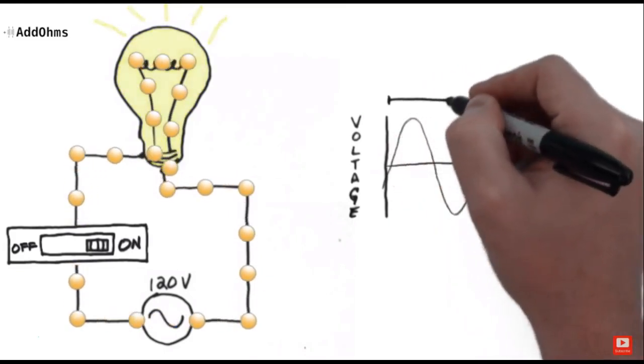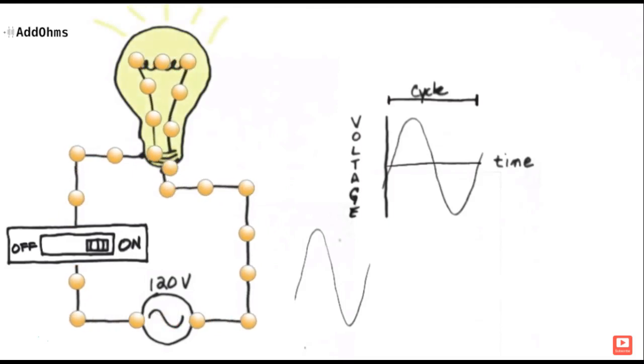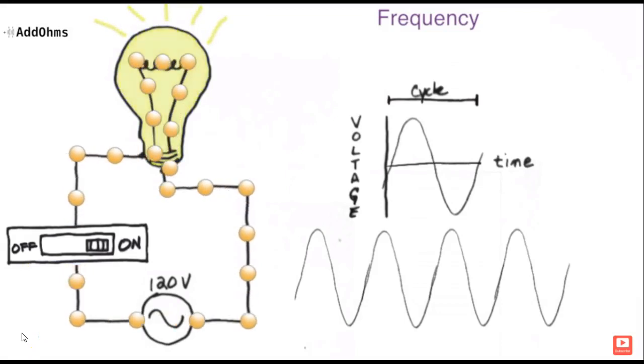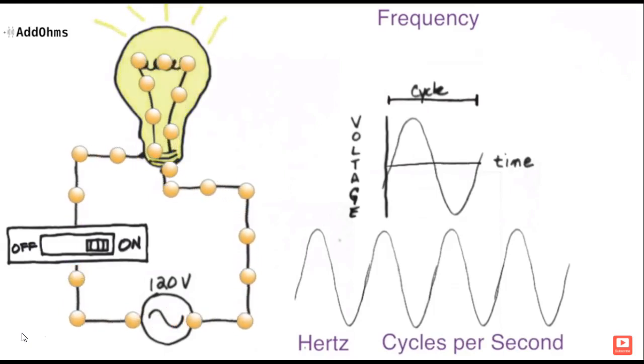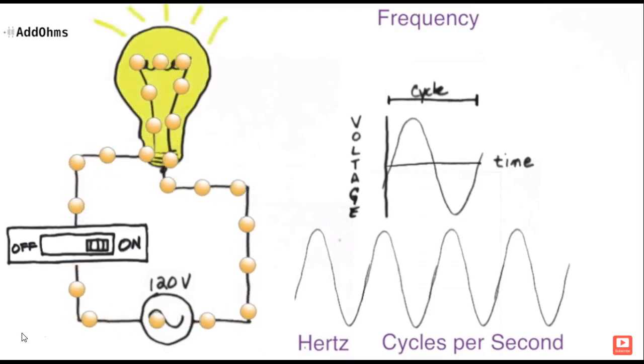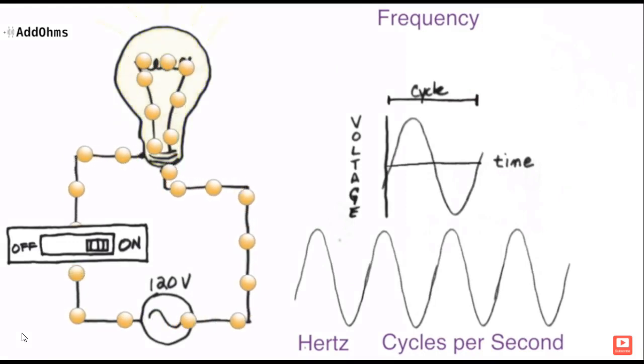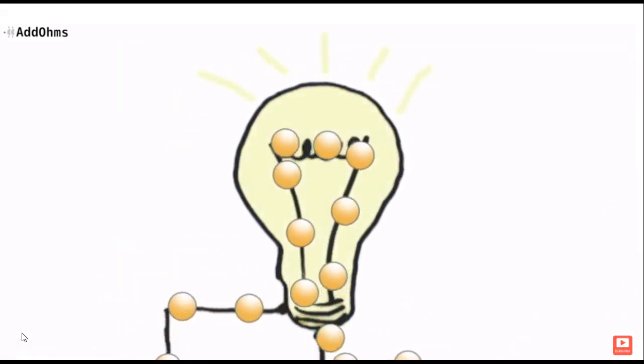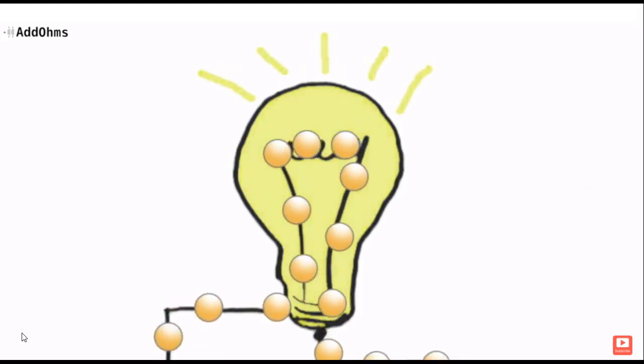We need to define a couple things. First, the change from start to finish is called a cycle. The rate at which the cycle repeats is frequency. Frequency is measured using the unit hertz, which means cycles per second. Different parts of the world use different frequencies for their AC systems, either 50 or 60 hertz. This means in one second, the cycle repeats itself at least 50 times. Incandescent bulbs are actually flashing over 50 times per second, but this rate is so fast that our eyes see it as constant light.